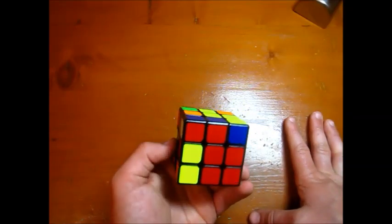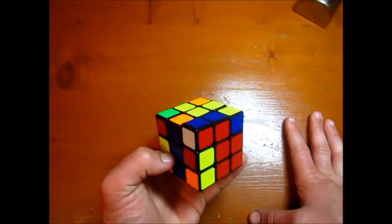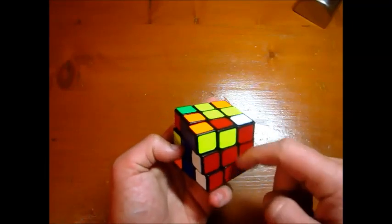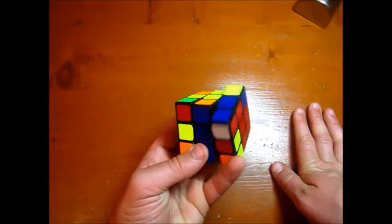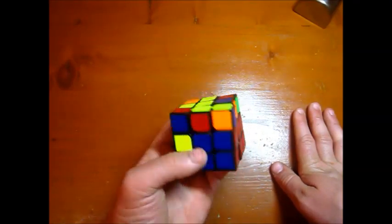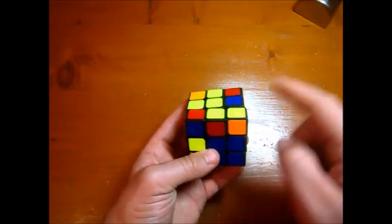so this edge is not part of our last layer. So actually we don't really care about its orientation. But this edge, if we look, doing an R to put it into the top layer would leave it misoriented. So we want to change its orientation and therefore we do a sledgehammer instead of R U and this edge ends up oriented.